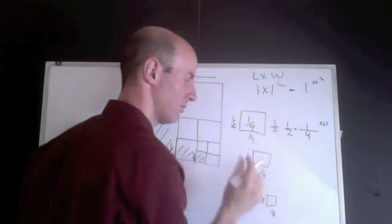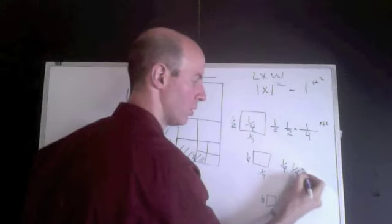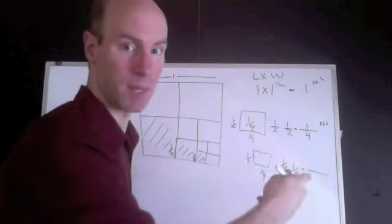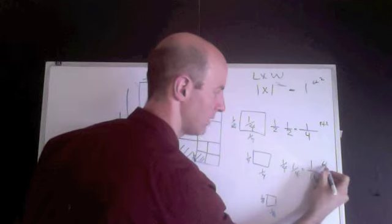Now I'm going to do the same thing for the middle box. 1 fourth times 1 fourth, multiply the tops by the tops, and the bottoms by the bottoms, I get 1 sixteenth feet squared.